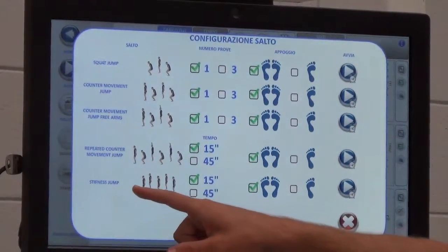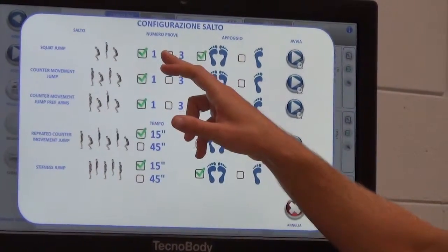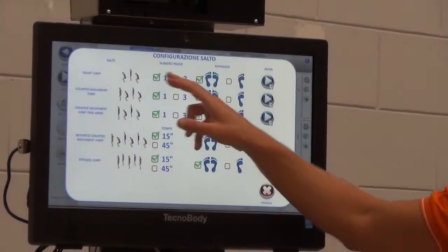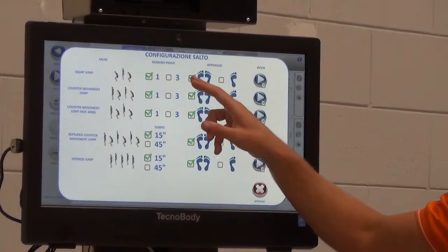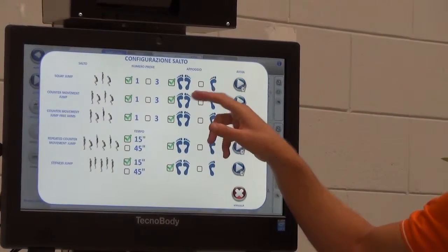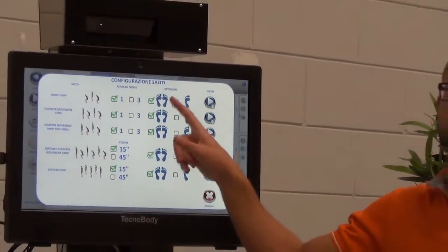Then the repeated counter movement jump and the stiffness jump. For each jump you can decide if you want to perform just one single jump or three jumps. On top of that you can decide if you want to jump with the two legs standing and jumping or if you want to compare right side with the left side.